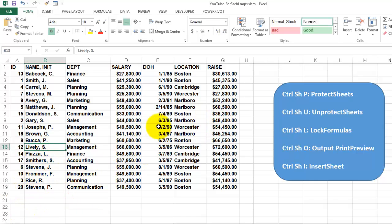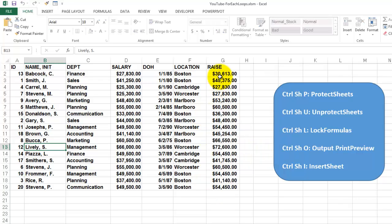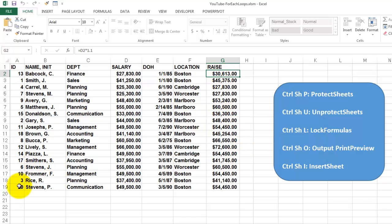Now I'm going to lock only the formulas. Ctrl-Shift-L. All formulas are protected now. This happens to be a formula. So if I try to type in there, it will say no. You cannot do that. But I can change something that is not a formula.